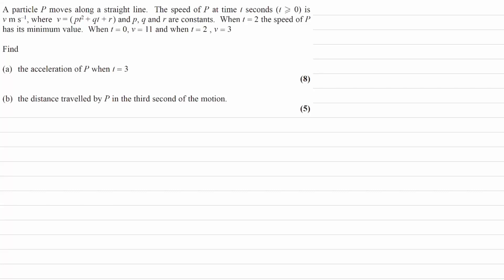A particle p moves along a straight line. The speed of p at time t seconds, where t is positive, is given by v, where v equals pt squared plus qt plus r. We're told that p, q, and r are constants. We're told that when t equals two the speed has its minimum value, when t is zero v is 11, and when t is two v is three. We're trying to work out what the acceleration is.